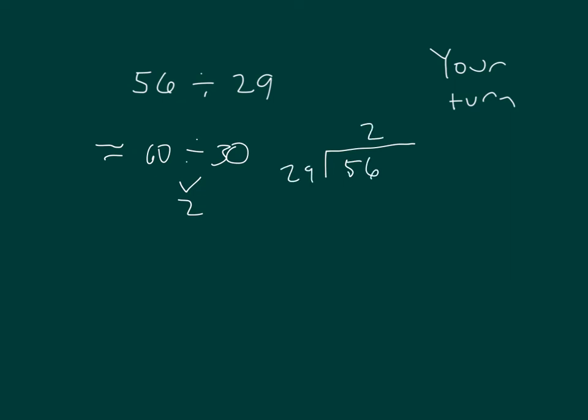For 2, you get 58. And you can't subtract 58 from 56. So you have to revise your estimate to 1. And then hopefully, you were able to do that. So you get your remainder of 27.